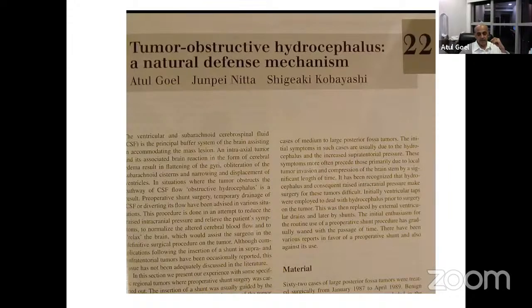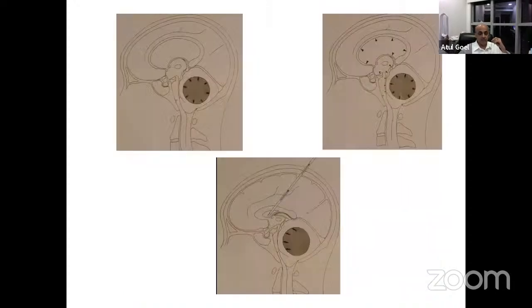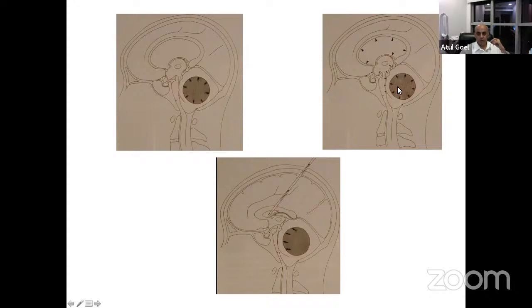The only similarity I have found in the literature is my own articles — when there is a tumor, how the water changes. When there is a posterior fossa tumor, there is hydrocephalus, and this hydrocephalus is a natural protection. It is secondary, it is protective. You remove the tumor, the hydrocephalus will disappear. There is no need to do shunts.